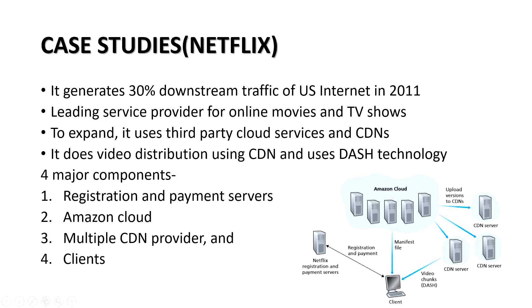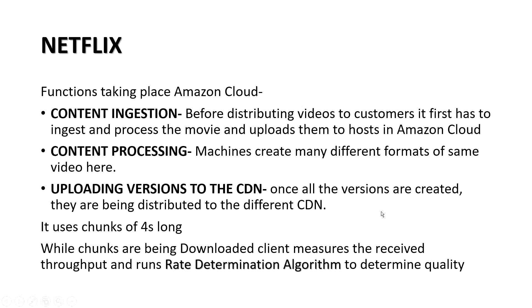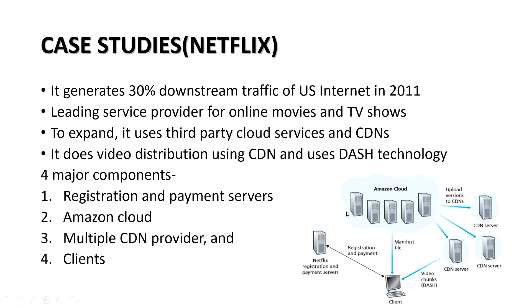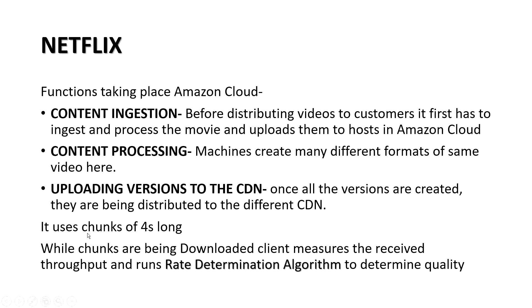After registrations are done, it will be sent to the Amazon cloud directly. For distributing the videos, Netflix first has to ingest its videos to Amazon cloud before releasing them to customers. Amazon cloud processes all the videos given by Netflix and creates different formats of the same video. These are then served to CDN clusters, from which clients can fetch video chunks. Chunks are four seconds long. While the user is watching, a rate determination algorithm runs to determine the quality level supported by the client's machine.